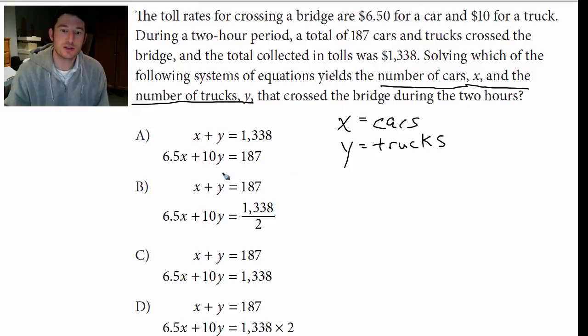As you can see here, there's two equations. One has to do with money, and one has to do with the total amount of cars. If I have X as the cars and Y as the trucks, they should total 187, right? So X plus Y equals 187. That's how many cars and trucks were there that day.